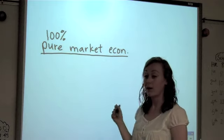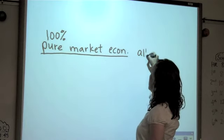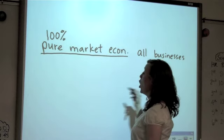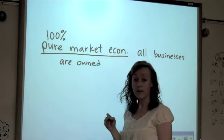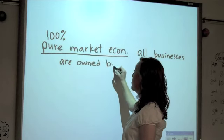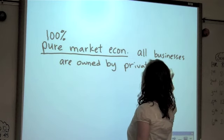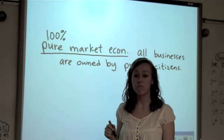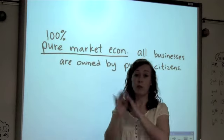So a pure market economy is a type of economy where all businesses are owned by private citizens. In this type of economy, if a citizen wants to start a business, they just start it. Bottom line, they don't have to get any approval from any government. There really isn't any government.